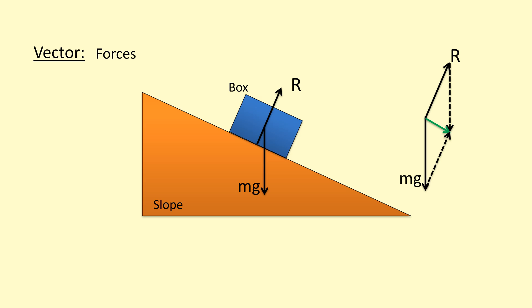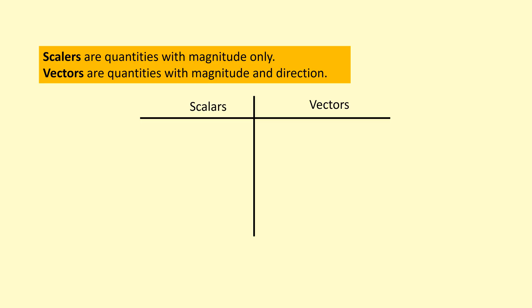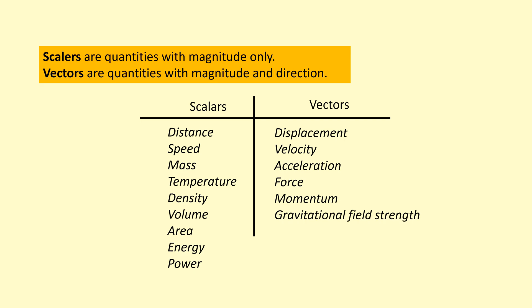Some other examples of scalars and vectors here. We've got distance, speed, mass, temperature, density, volume, area, energy, power. For vectors we've got displacement which is the equivalent of distance but as a vector, velocity which is like speed but also with the direction, and acceleration, force, momentum. There are others as well.